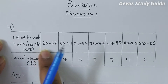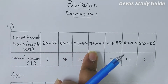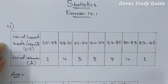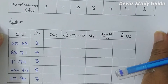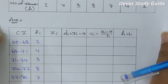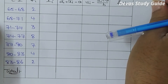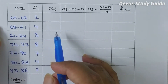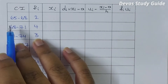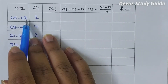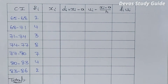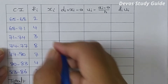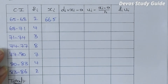We will use the step deviation method. For the class interval 65 to 68, the midpoint xi is calculated as 65 plus 68 divided by 2, which is equal to 66.5.